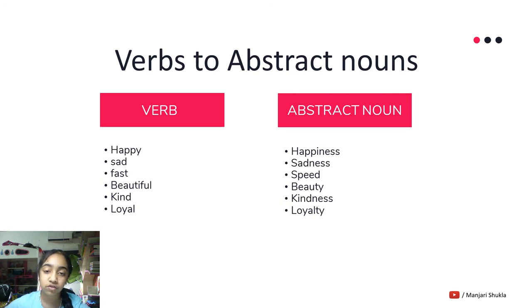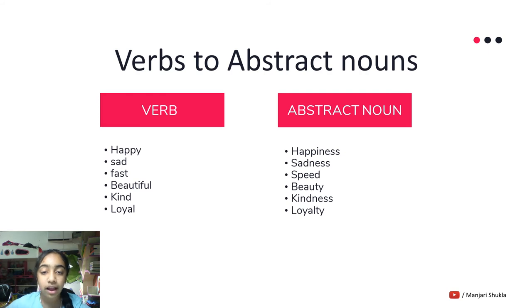Some more kinds of differences are: speed and fast, beautiful and beauty, kind and kindness, loyal and loyalty.